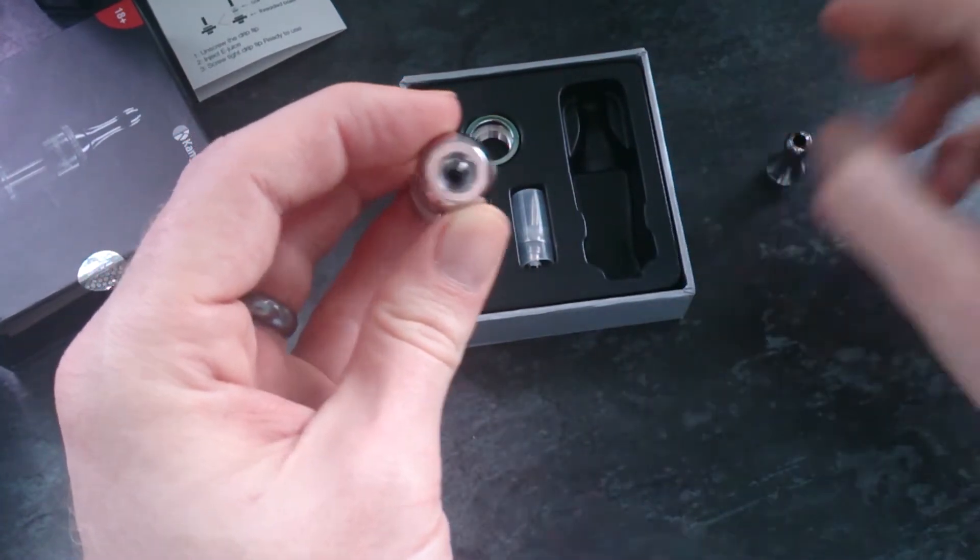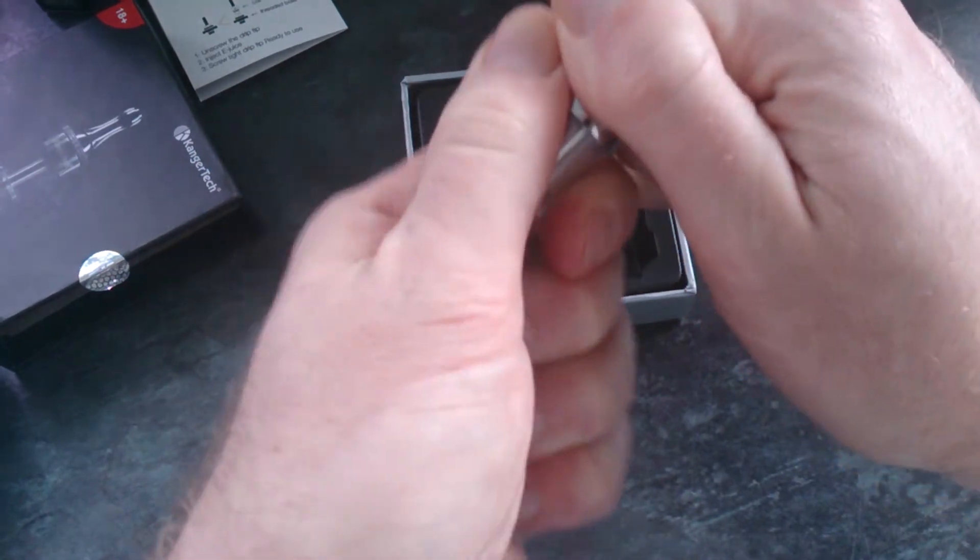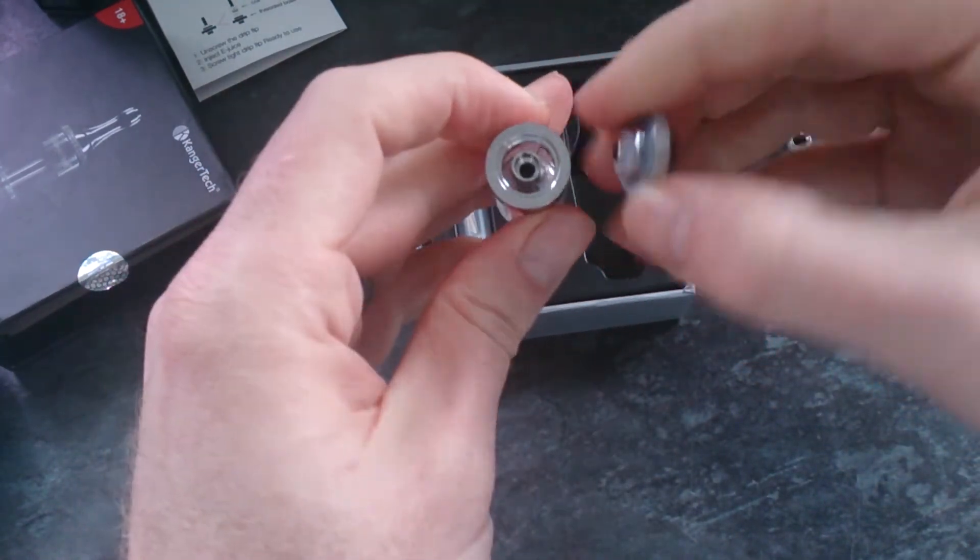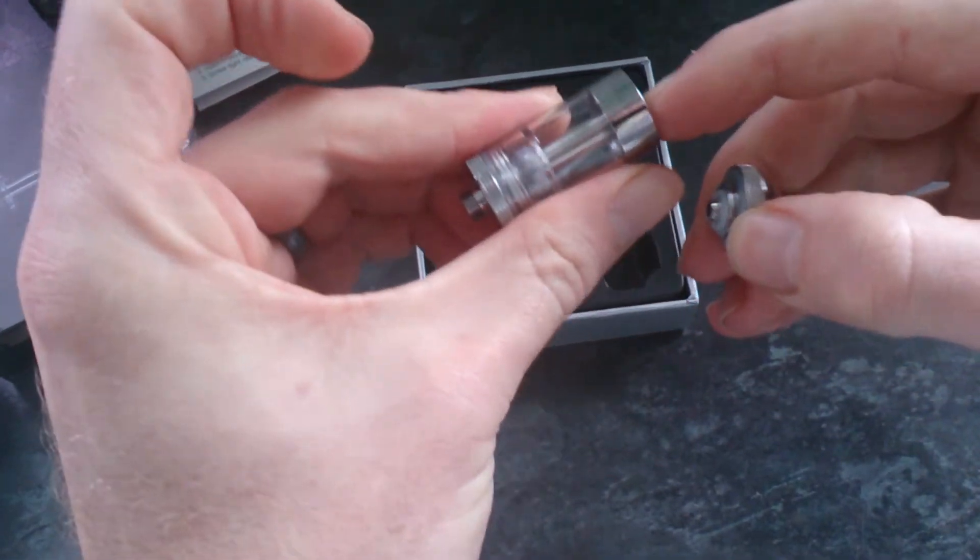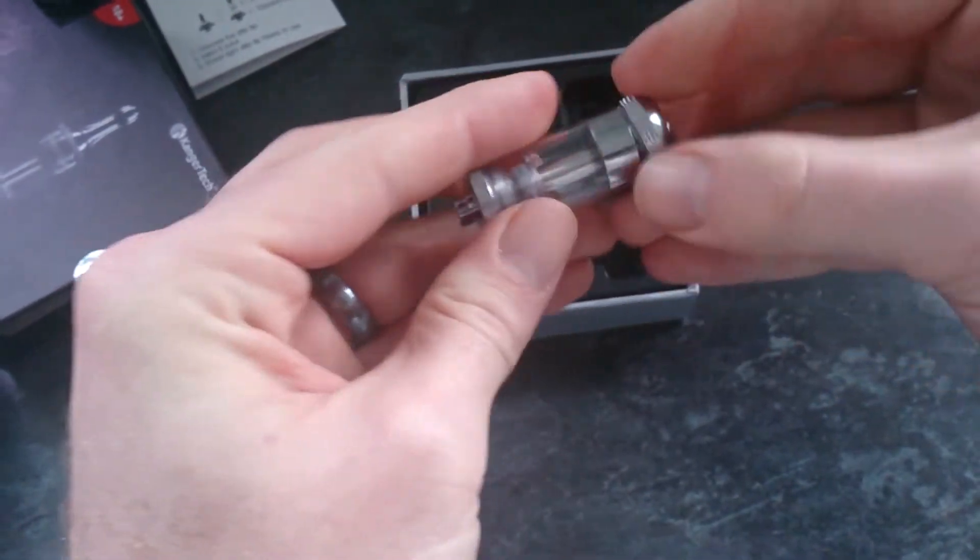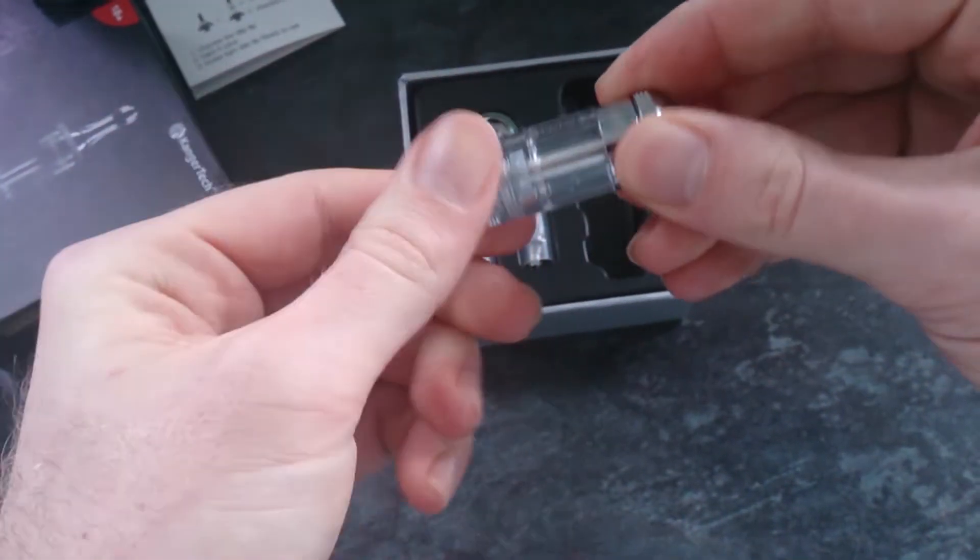Unscrew this bit. Yeah that was tight. That pops up, that little spring bit there, you can see it moving there. Fill it up and you squeeze this back in, it pushes the spring down and creates a little seal.